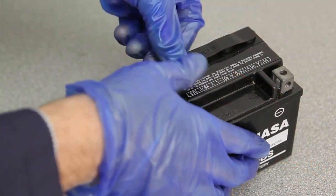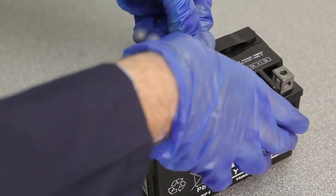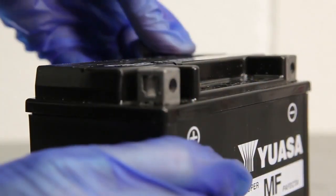Once completed, push the cap strip down using firm pressure from both hands until it's fully flush with the top of the battery.